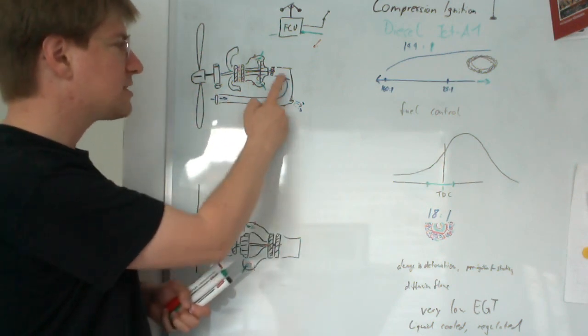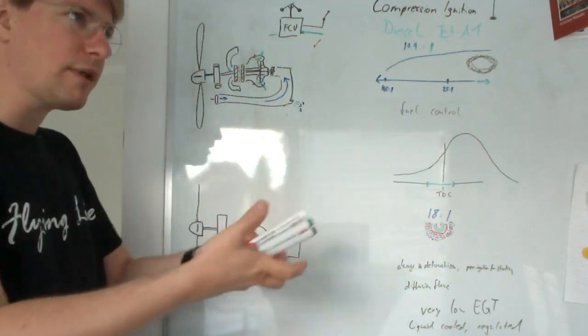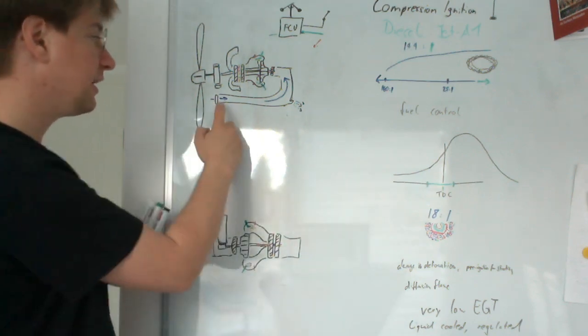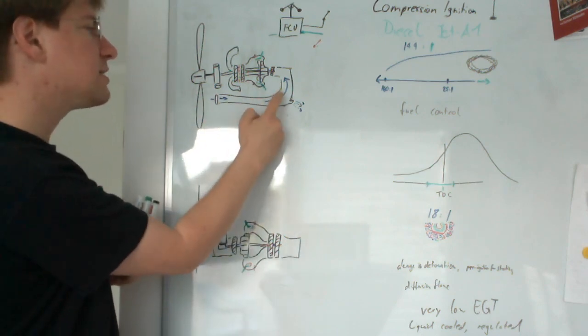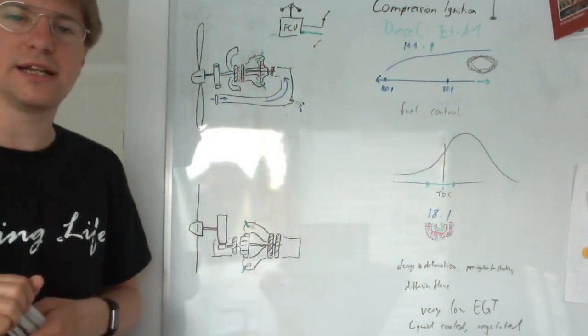So the turboprop starts by sucking in air through the cowling, symbolized here by the blue line. The blue line is the air, the green line is the fuel.